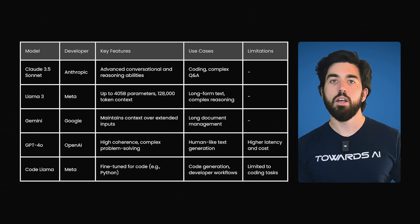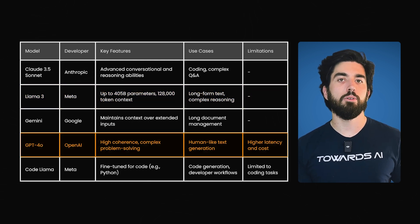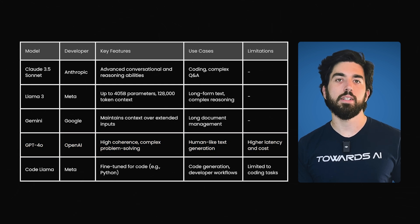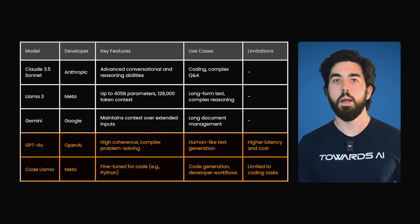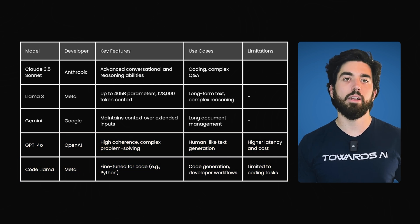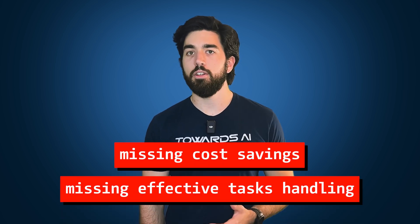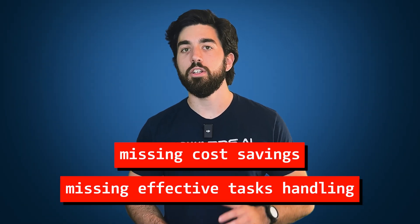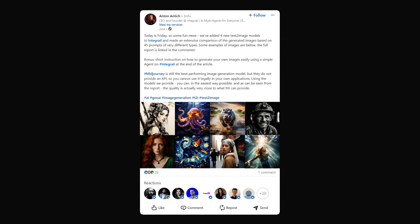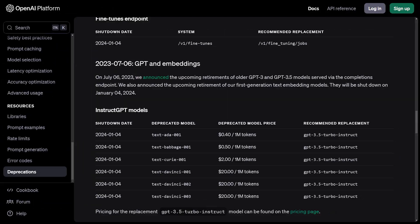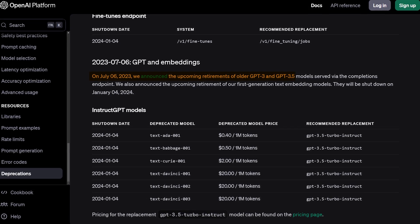You can think of these models like specialists — one may be better at reasoning, another at generating creative content. For tasks like coding or complex reasoning, GPT-4o or Claude 3.5 Sonnet might be your go-to. But for simpler generation or answering basic questions, a lighter model like Llama or Gemini Flash might be a smarter choice. When you rely on a single model, you risk missing out on advantages like cost savings or the ability to handle specific tasks more effectively — not to mention the challenges of downtime. Integral recently mentioned the importance of testing models before migrating, especially considering OpenAI's discontinuation of older versions of GPT-3.5. Switching to different LLMs could save a lot of trouble during such transitions.